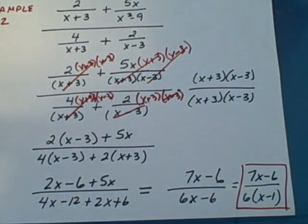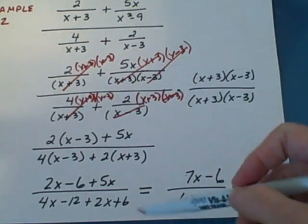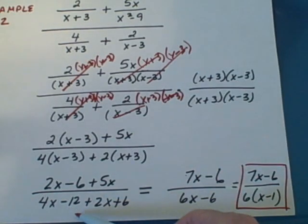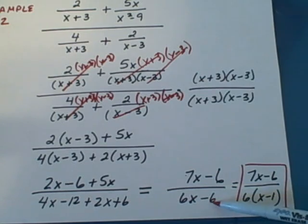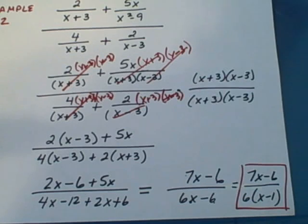And 4x plus 2x gives me 6x. Oops Dr. Edmiston caught herself. Oh no we're done. And then we have negative 12 plus 6 is negative 6. And then we can factor out a 6. And we have that. Final answer.